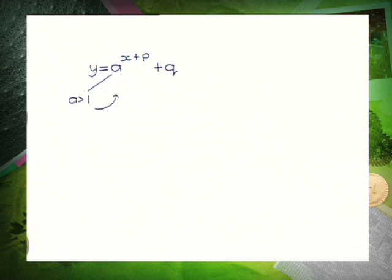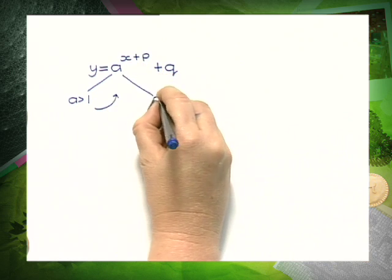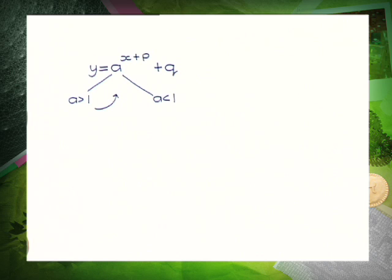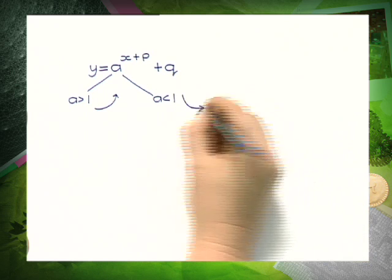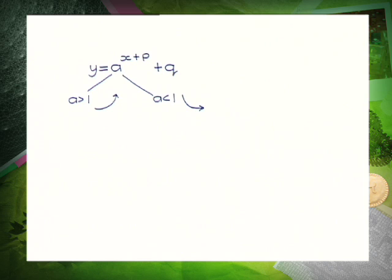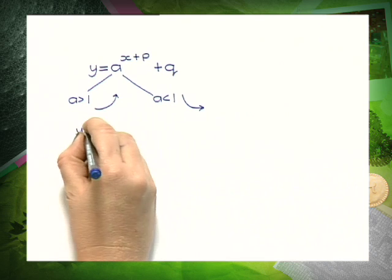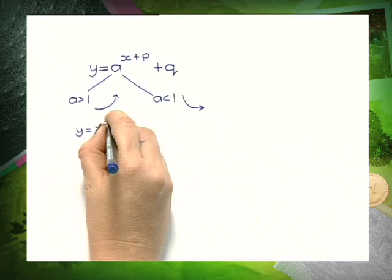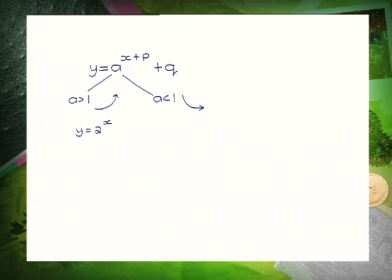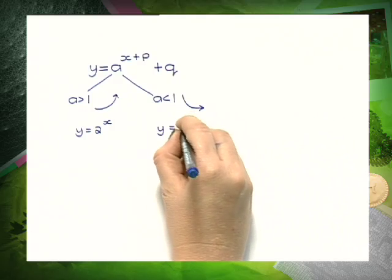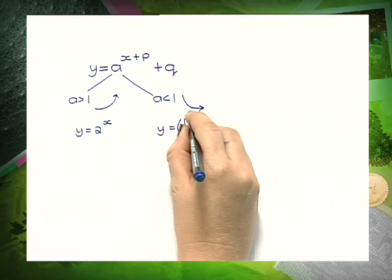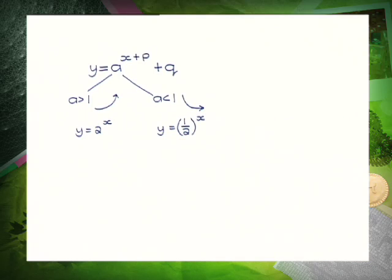If the value of a is less than 1, then our exponential function is decreasing. For example, if the function is y equals 2 to the power of x, then it is increasing. And if the function is y equals one-half to the power of x, remember to put that in a bracket, it is decreasing.